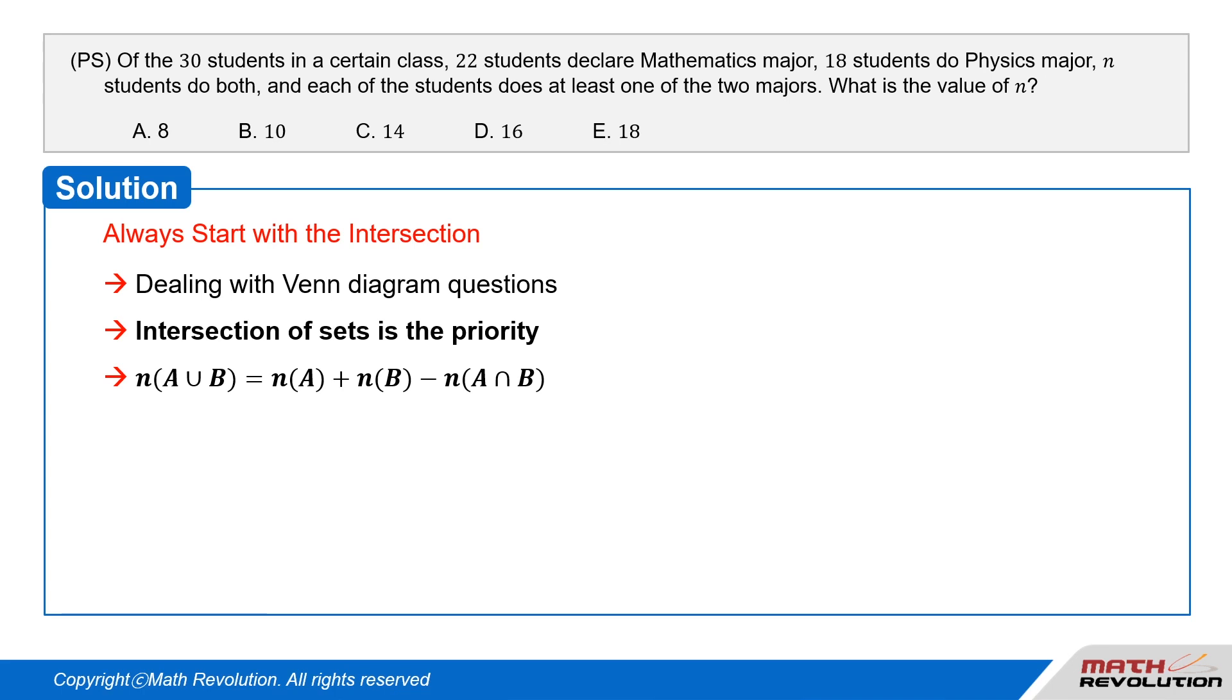And the number of elements of A union B is the number of elements of A plus the number of elements of B minus the number of elements of A intersection B.